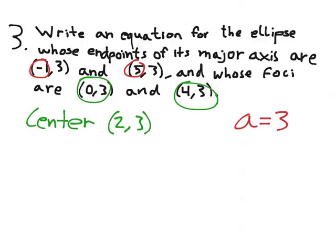But now I have to find what b is, and they don't tell me anything about the minor axis. However, they do tell me the foci. And we know that the foci have to do with plus or minus c. And c is the square root of a squared minus b squared.